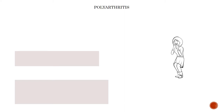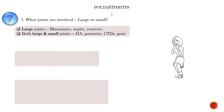If it is polyarthritis, you must ask three questions. First, what joints are involved — large or small? Large joints are characteristically involved in arthritis seen in acute rheumatic fever, septic arthritis, and reactive arthritis. Both large and small joints are seen in juvenile idiopathic arthritis, psoriatic arthritis (with characteristic involvement of distal interphalangeal joints), connective tissue disorders, and gout.